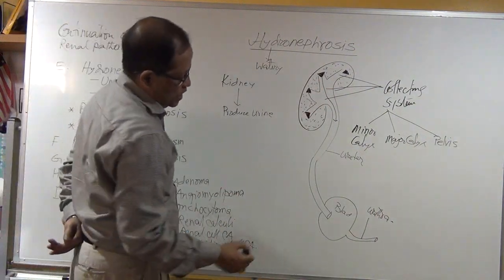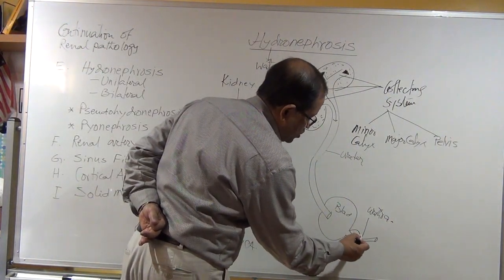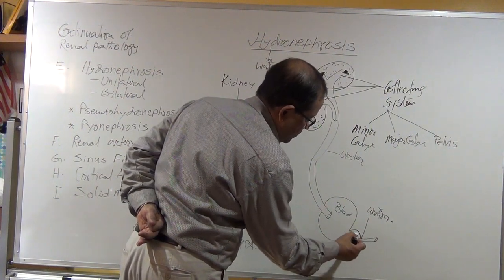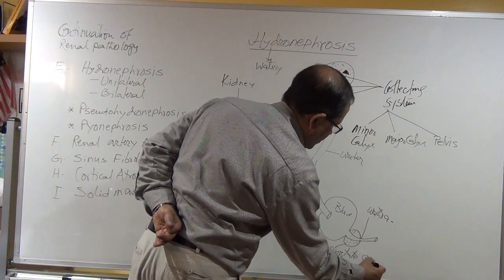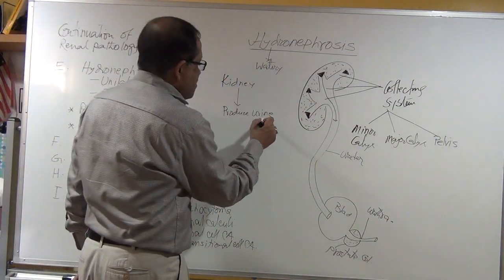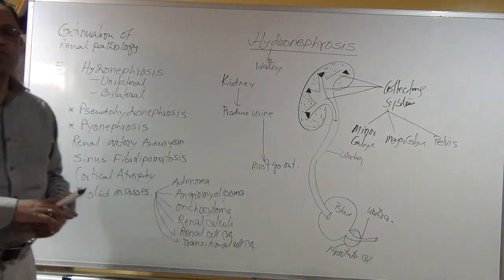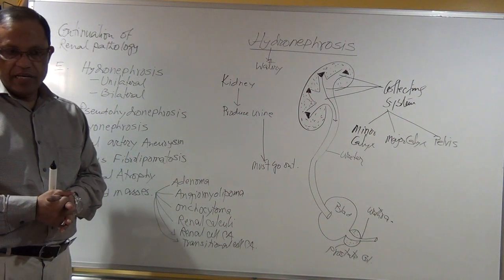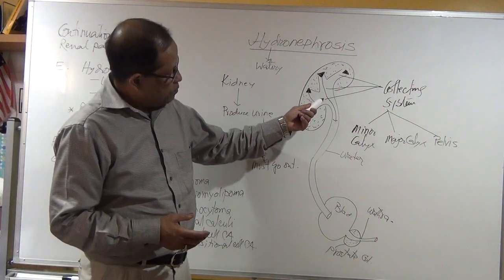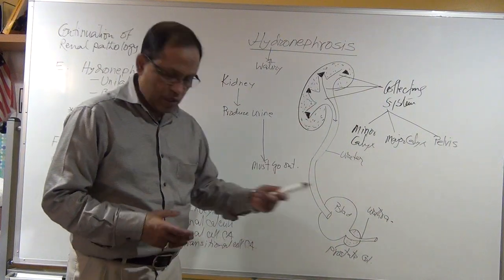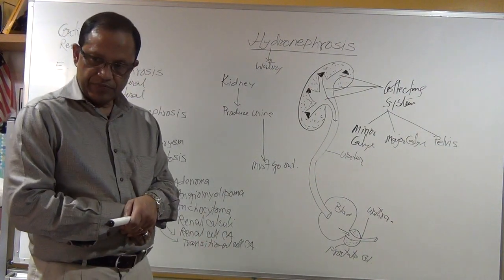To understand hydronephrosis, you need to understand this pathway. In a male, there is also a prostate gland here. Urine cannot be stored in the kidney — it can only be stored temporarily in the bladder. The urine must come down through the ureter into the bladder, and when the bladder is full, it must pass through the urethra.